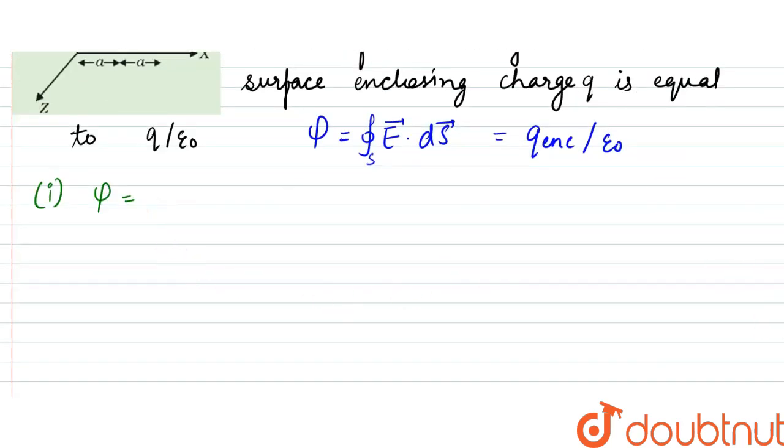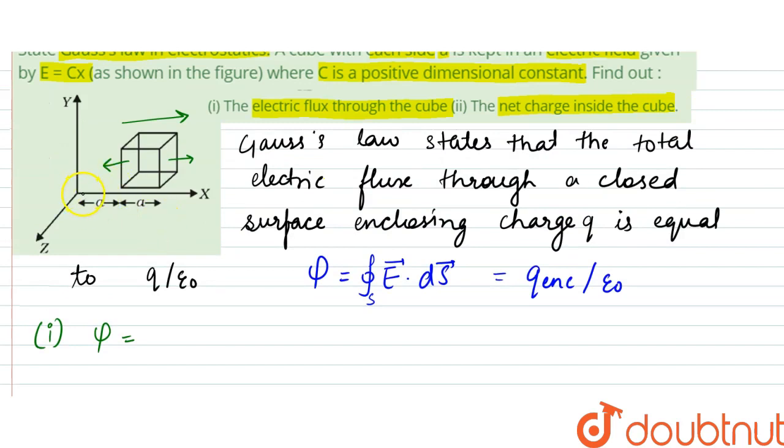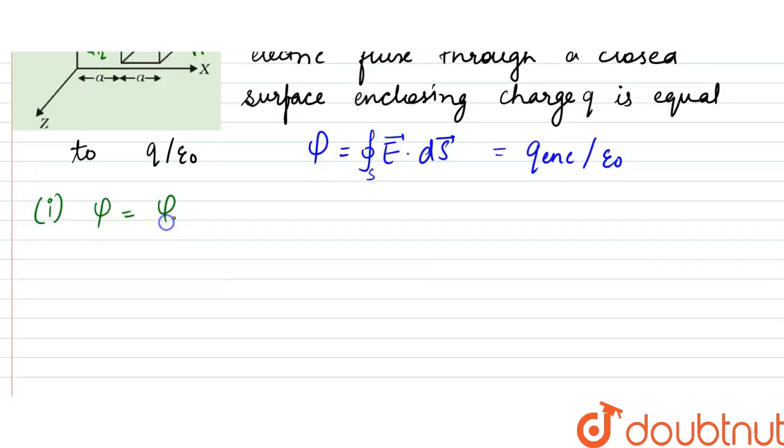So according to that, we can write, let this be due to this area, that would be phi 1. And due to this, this would be phi 2. So it would be phi 1 plus phi 2.